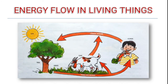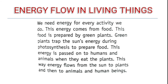Regarding energy flow in living things: plants leave food and oxygen which is used by animals and human beings, and animals leave out carbon dioxide which is used by plants — so plants and animals are both dependent on each other. We need energy for every activity, and this energy comes from food, which is prepared by green plants. Green plants trap the sun's energy during photosynthesis to prepare food.